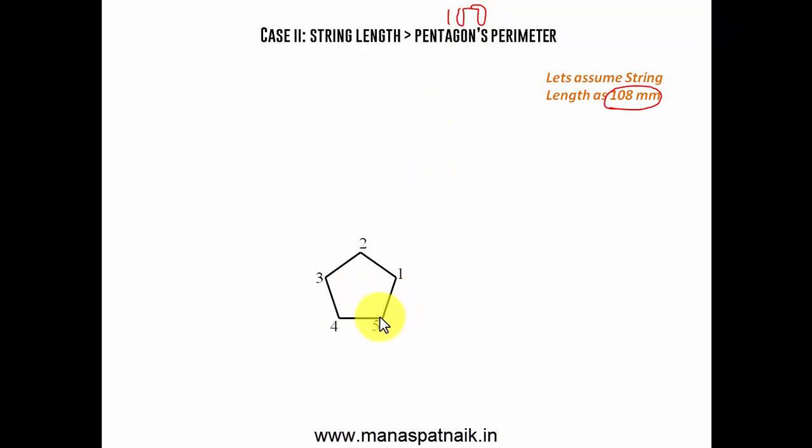Let's have a string over here whose one end is attached at 5. Now, right now, we're going to assume the string length as 100 millimeters only. And then, we're going to extend it. Just wait and watch. This is 100 and let's divide this into 5 equal parts. The procedure remaining same. 1, 2, 3, 4, 5. And from here, we need to travel more by an amount of 8 millimeters.